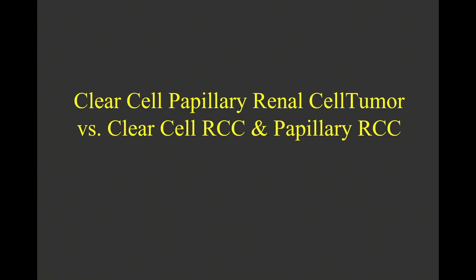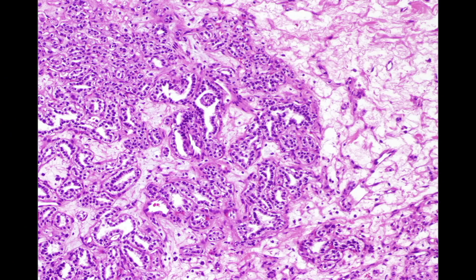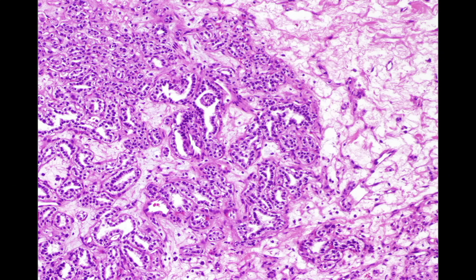You may know this entity as clear cell papillary renal cell carcinoma, but as we'll discuss, there is a movement to call these tumors simply 'tumors' rather than carcinomas. Clear cell papillary renal cell tumor is not clear cell carcinoma, and it's not papillary renal cell carcinoma — it's its own distinct entity. It has also been called tubulopapillary renal cell carcinoma because it has a very prominent tubular component. At low power, we see tubules, a little papillary formation, and clear cells.